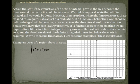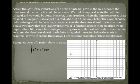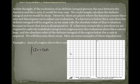At first thought, if the evaluation of a definite integral gives us the area between the function and the x-axis, it would be very easy — we could simply calculate the definite integral and be done. However, there are places where the function crosses the x-axis, and this requires us to adjust our evaluation. If a function is below the x-axis, the definite integral would be negative, so we must take the absolute value of that evaluation because area is always positive. If the function crosses the x-axis, we are required to split the integral into regions where the evaluation above the x-axis is kept and the absolute value of the definite integral of the region below the x-axis is used. We will then sum these areas.